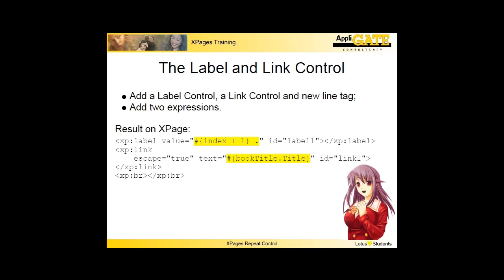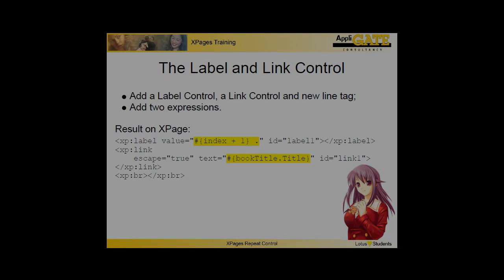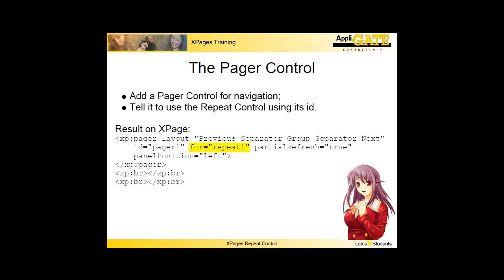Later on I will show you how we can use the link to publish an action and a value, which can be consumed by other Lotus Notes components. As a last step, I added the pager control to the XPage. On the all properties tab, you find that it has an attribute called for. I added it to the control and specified the ID of the repeat control as the value. I will demonstrate the steps in the next demo.